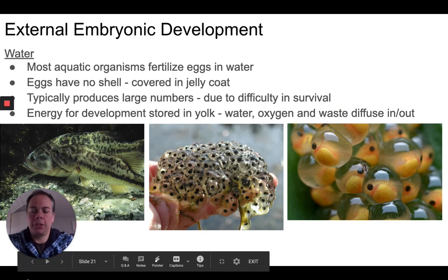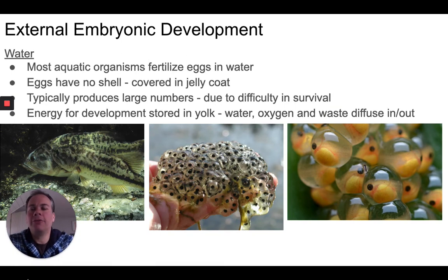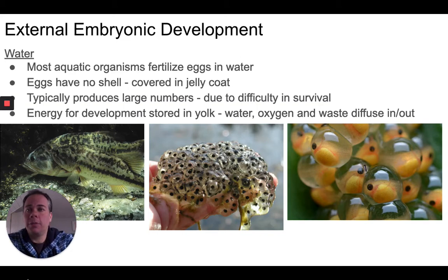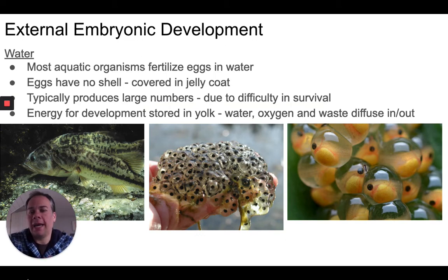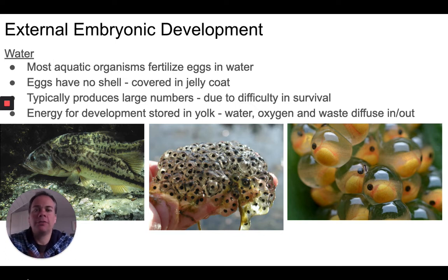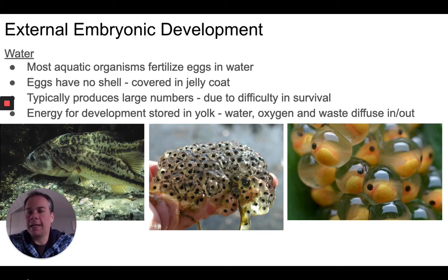Different organisms have different adaptations for reproduction, including different means of fertilization and development. Some organisms reproduce through external fertilization, meaning the sperm and egg cells meet outside of the organism's body — typically in water. Examples include fish and amphibians. When fish spawn, the male and female release their sperm and egg cells into the water, sperm cells reach and fertilize the eggs, and those fertilized eggs then develop externally.